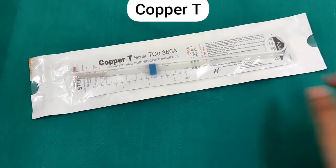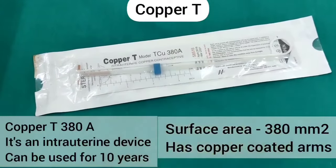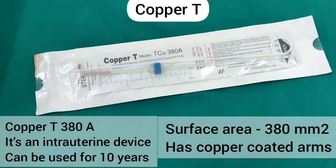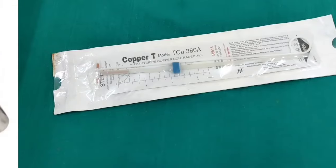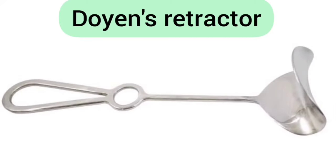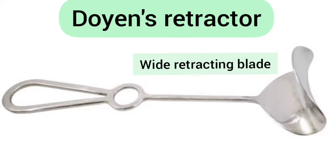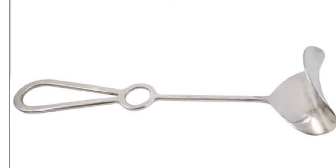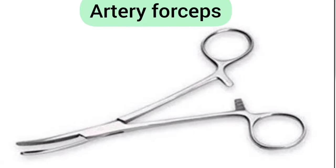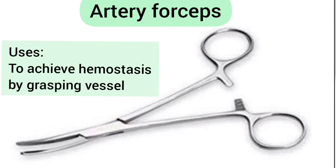Copper T380A — 380 indicates the surface area and A means that the copper is present in the arms. Doyen's retractor — it has a wide retracting blade. It is used to retract the abdominal wall during LSCS operation. Artery forceps — it is used to achieve haemostasis by grasping the vessels.